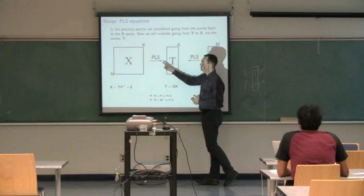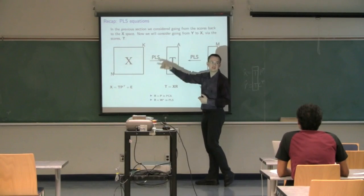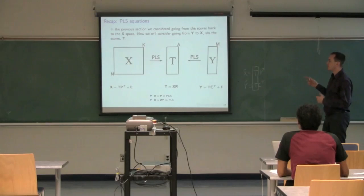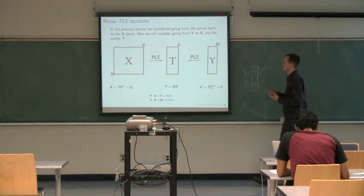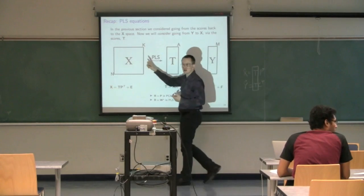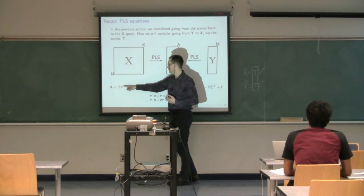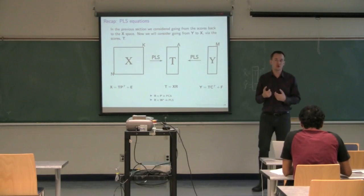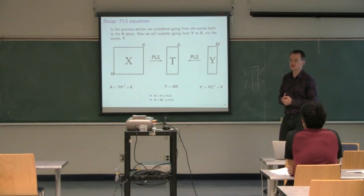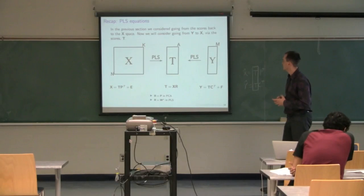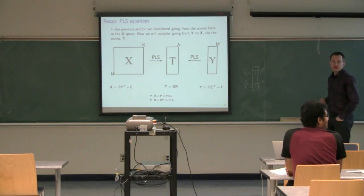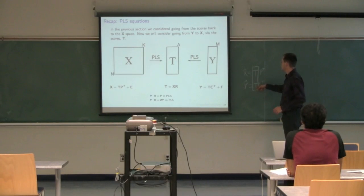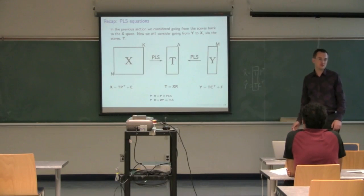When PLS calculates the scores, the NIPALS algorithm flips between the X-space and the Y-space. It keeps going between both spaces until it converges on a set of scores T that explains X well and explains Y well, and finds those scores so that the correlation between X and Y is maximized. There's a common dimension T between the X and Y-space, and it's found from both data matrices simultaneously.